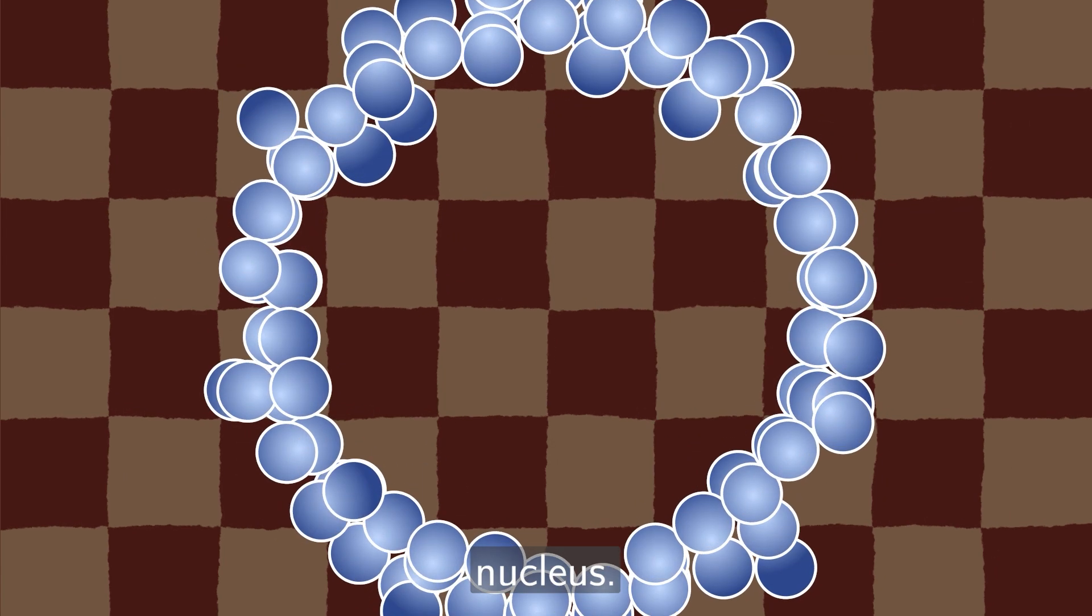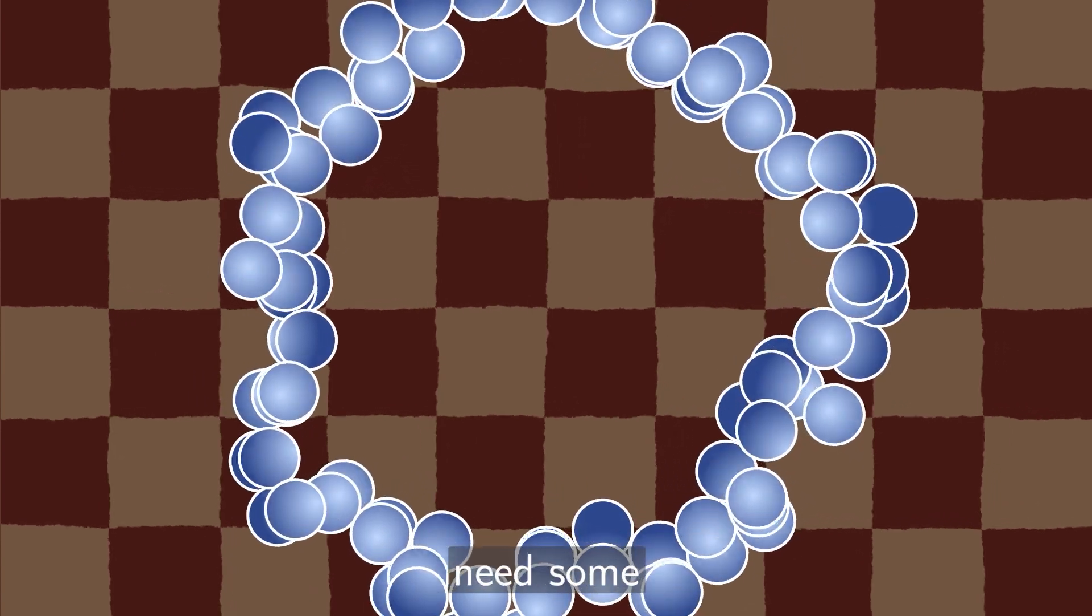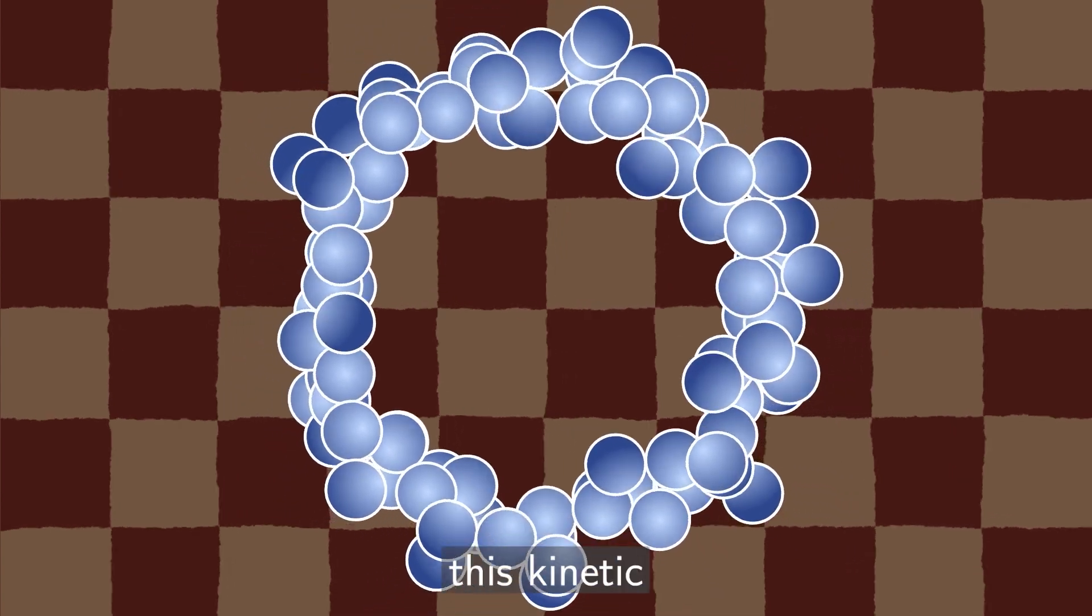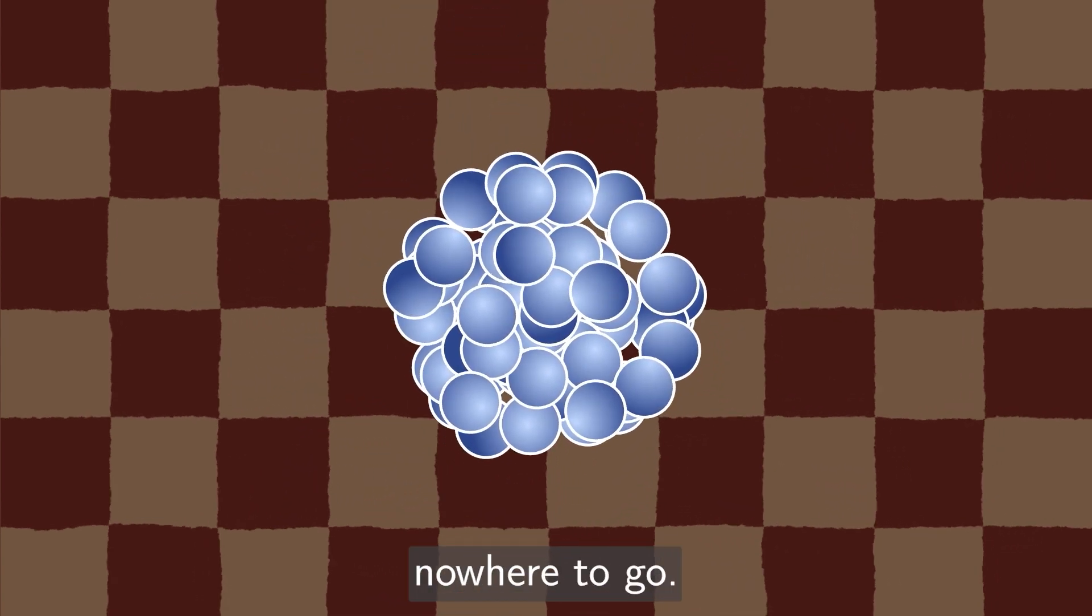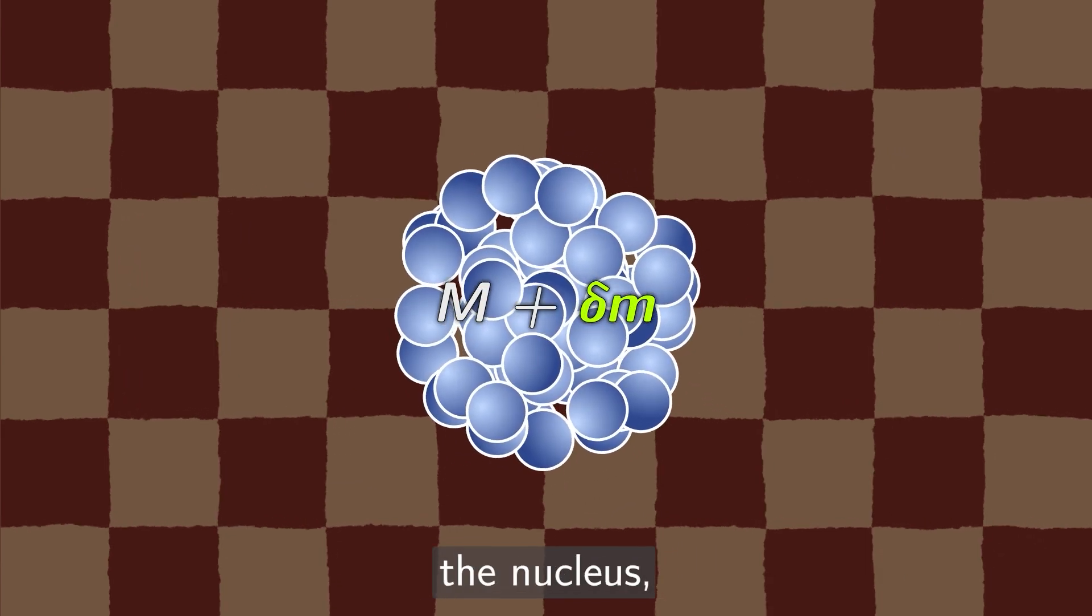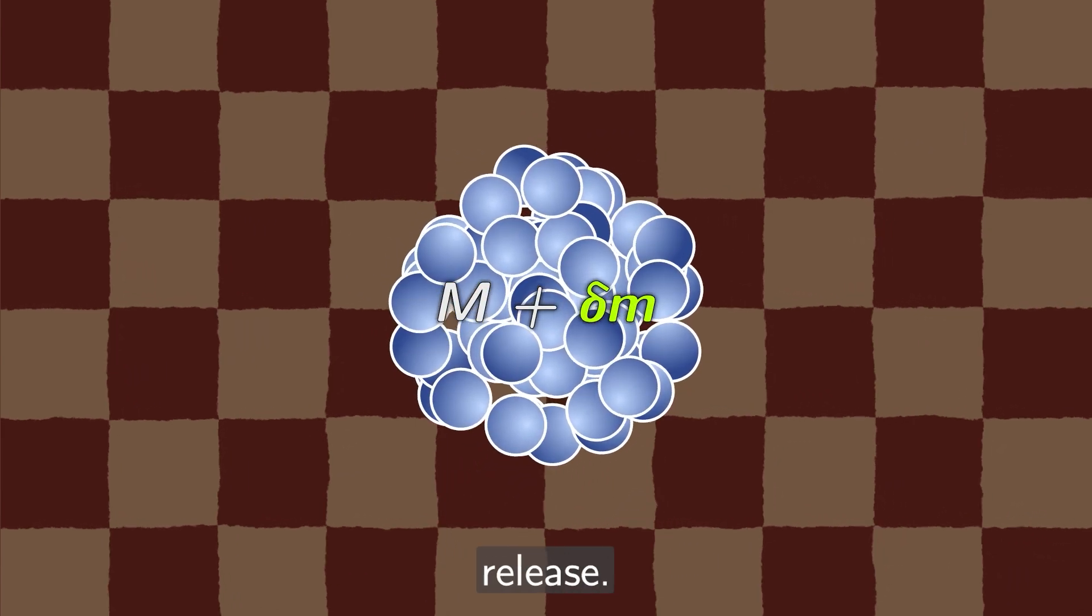Likewise, this is what happens in the nucleus. Protons and neutrons need some energy to form a nucleus, but when they collide with each other and stop, this kinetic energy has nowhere to go. So, it creates more mass. Thus, when we split the nucleus, some of this energy is released.